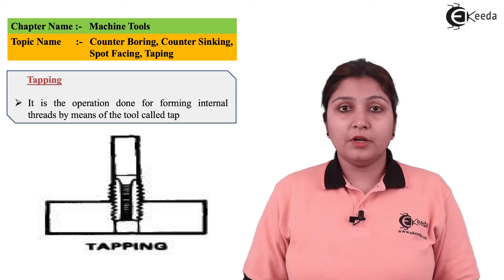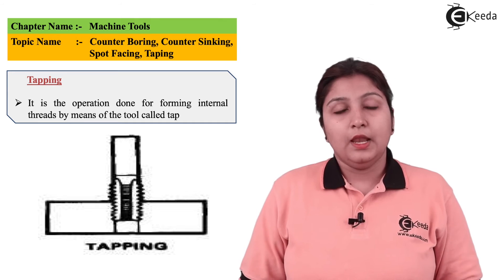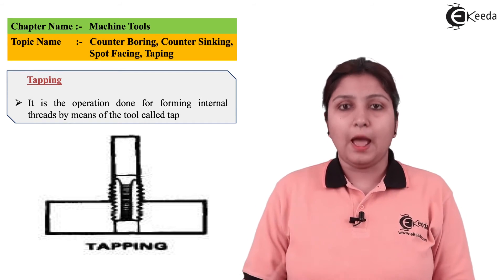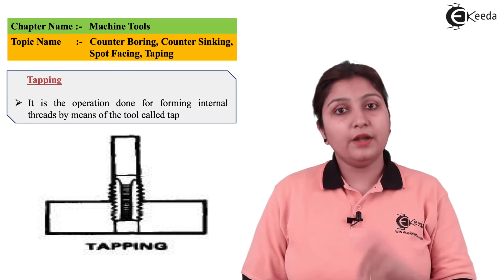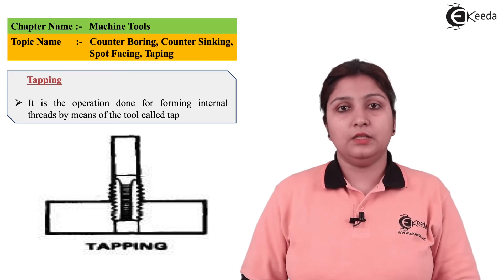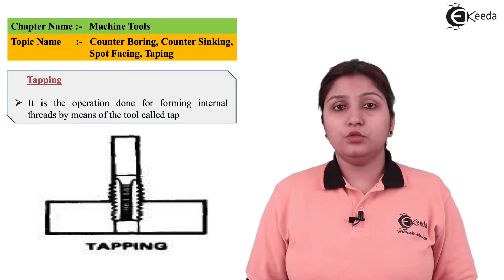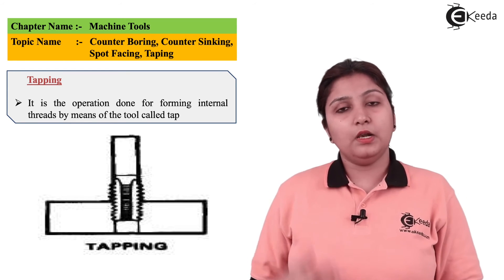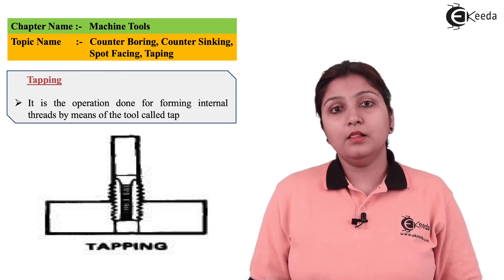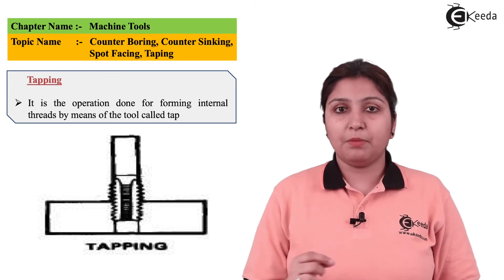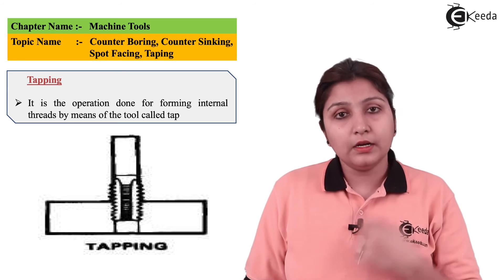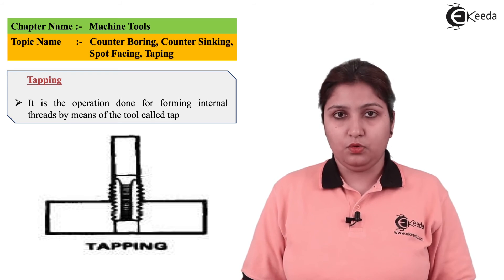Capping is an important part of drilling operation. If you want to drill internal threading, you can use a tap, which has threading at its outer edge and internal threading can be easily given. Also, it can be used by using a spindle, which helps in rotary motion and it goes down. The hole is already drilled, but internal threading is given by using a tapping tool.